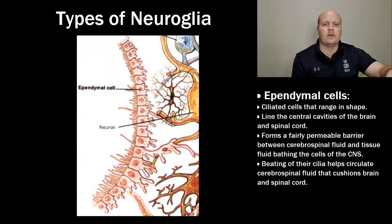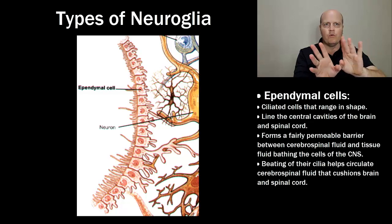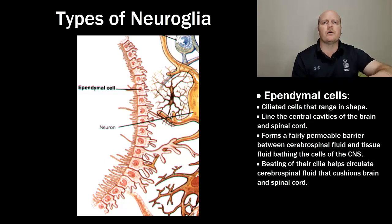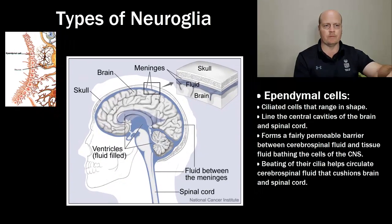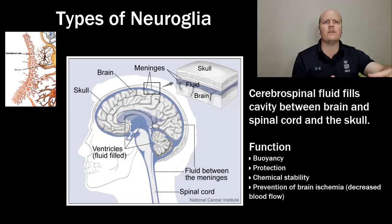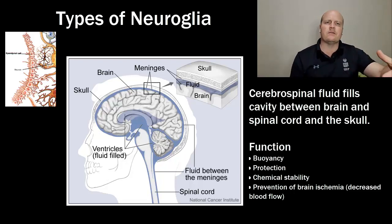Ependymal cells are ciliated — cilia are little hairs on the outside of cells that move things along the cell wall. Ependymal cells line the central cavities of our brain and spinal cord and form a fairly permeable barrier between cerebrospinal fluid and the tissue. The beating of their cilia helps to circulate the cerebrospinal fluid that cushions the brain and spinal cord.